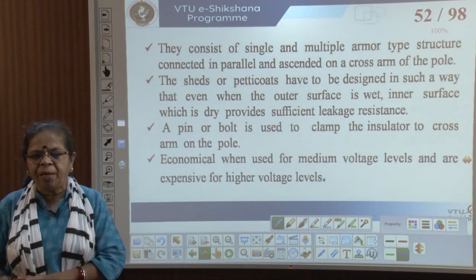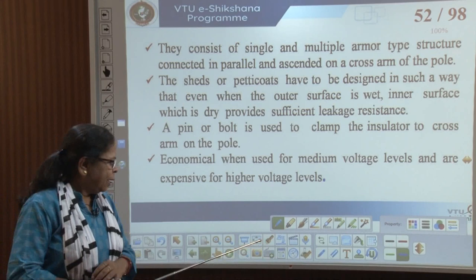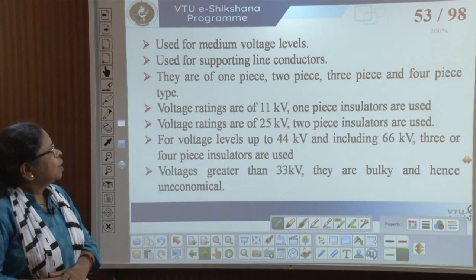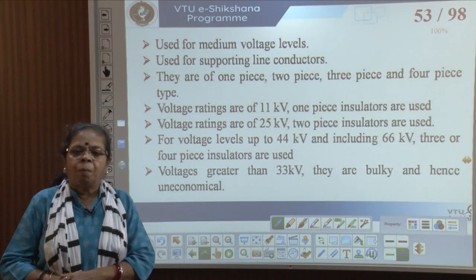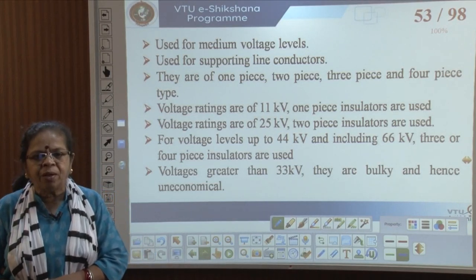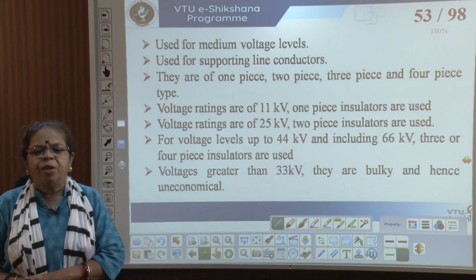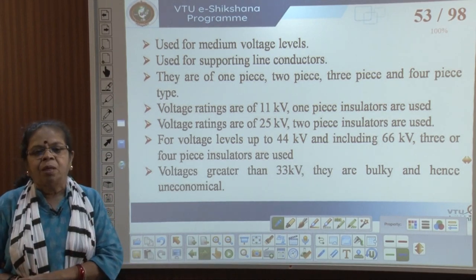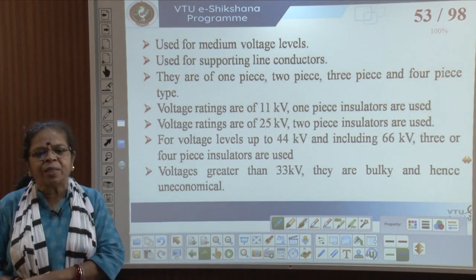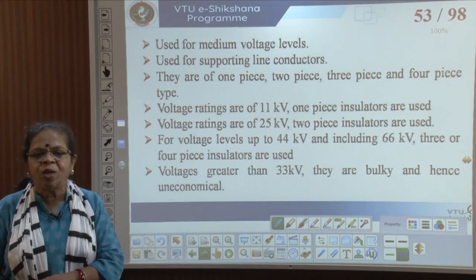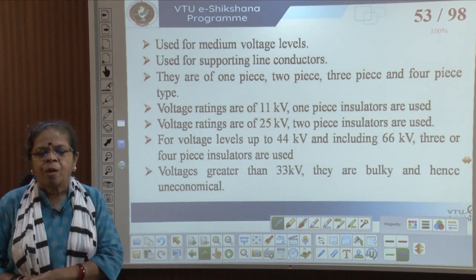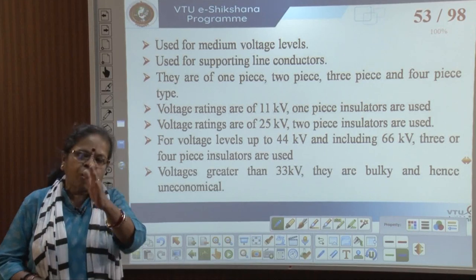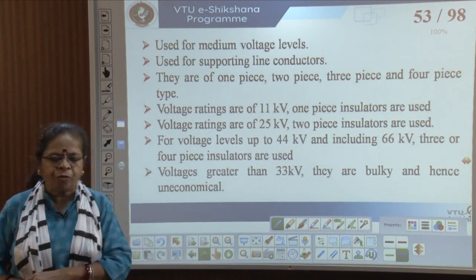Pin insulators are used for supporting line conductors. Voltage ratings of up to 11 kV use one insulator, up to 25 kV use two insulators, and up to 44 kV use three or four pieces. For more than 33 kV they become bulky and we go for the suspension type of insulators.